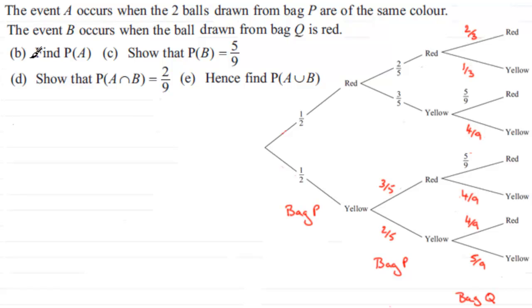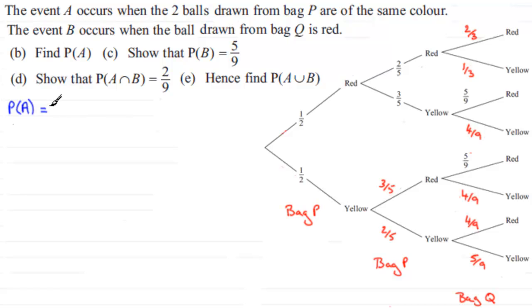In part B we've got to work out the probability of event A occurring. We're told that event A occurs when the two balls drawn from bag P are of the same color. So it's these two sections here which involve drawing from bag P, and the probability of event A happening means we could get two reds or two yellows.